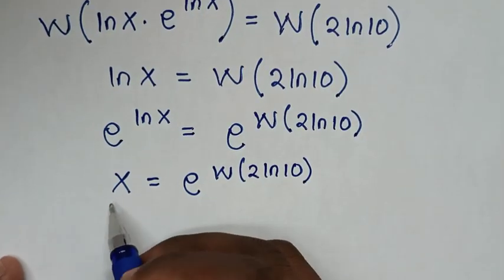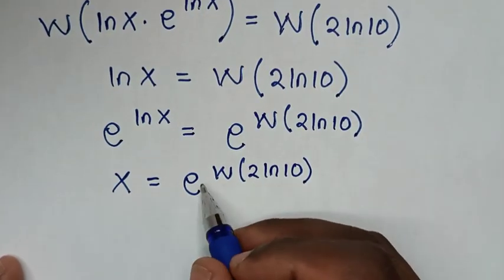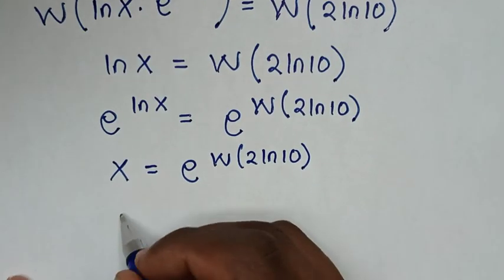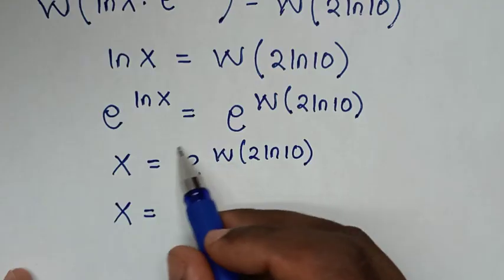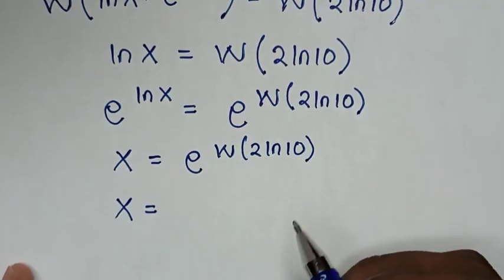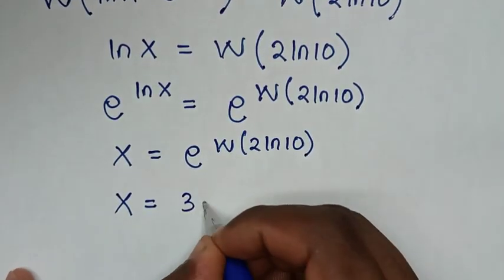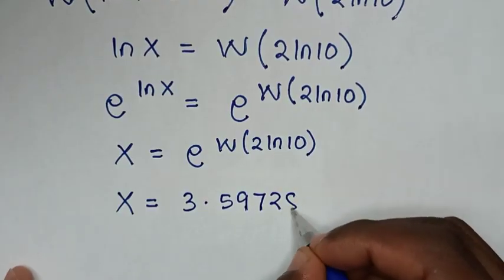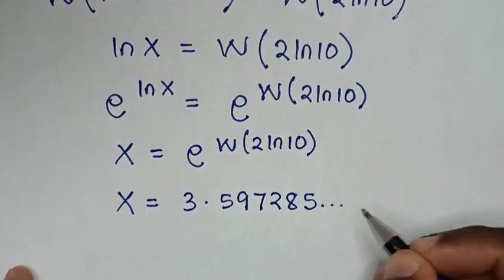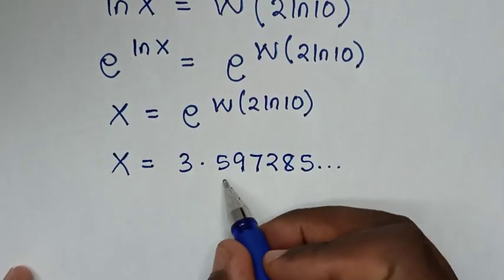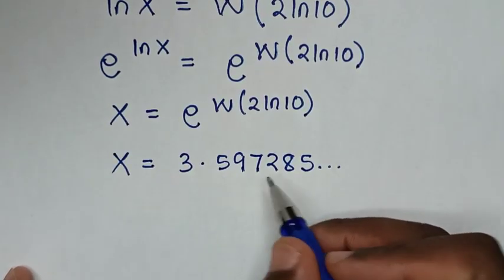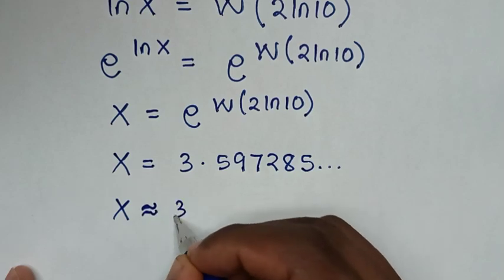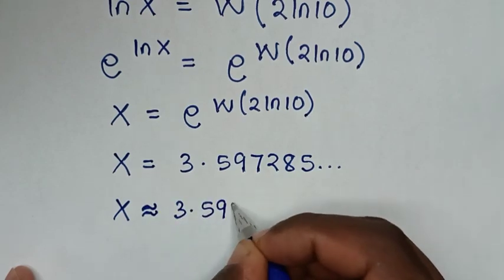So this is the final answer for the value of x in terms of e. Now, if we substitute it in the calculator, it is 3.597285 and so on. So if we approximate to 3 decimal places, it will be x is approximately equal to 3.597.